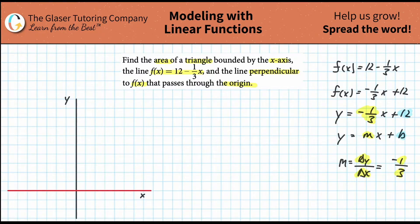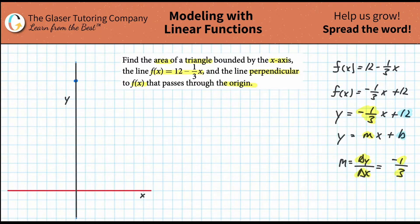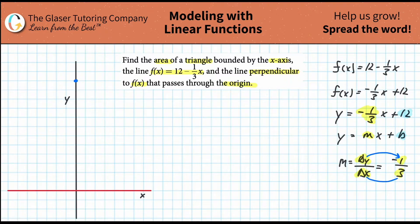Whenever you graph a linear line, you always start with the y-intercept value. The y-intercept is 12, so I count all the way up to 12 and place that point. Now, the slope is negative one-third, meaning go down 1 in y because it's negative, and go to the right 3 in x because it's positive. So starting from the y-intercept, go down 1 and go to the right 3 to plot successive points.